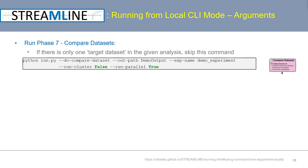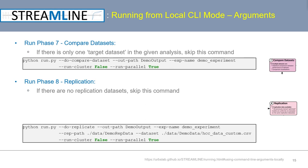To run the seventh phase — dataset comparisons — use the doCompareDatasets flag. Note that this phase should only be run if there is more than one target dataset in the DataPath folder given when running phase 1. To run the eighth phase — replication evaluation — use the doReplicate flag. This phase should only be run if you have one or more replication datasets set aside to further evaluate models trained on one of your target datasets. Specify the four key parameters, the path to the folder containing replication datasets, and the file path to the target dataset whose trained models will be re-evaluated.